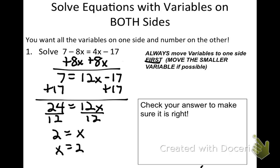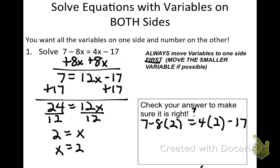The awesome thing about equations is that when you solve them, you can always check and see if you're right. Plug in your possible solution into the original equation wherever you see x. Work the left and right sides separately and see if they match. This will be 7 minus 16, which is negative 9. The right side: 8 minus 17, which is also negative 9. So that solution checks — we did it.